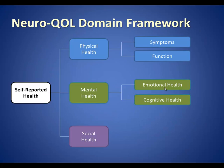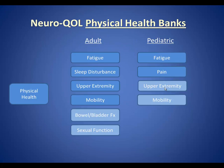These are the domains of health assessed by NeuroQual. NeuroQual assesses aspects of physical, mental, and social health. The physical health domain includes measures of fatigue, sleep disturbance, upper extremity function, and mobility for adults.